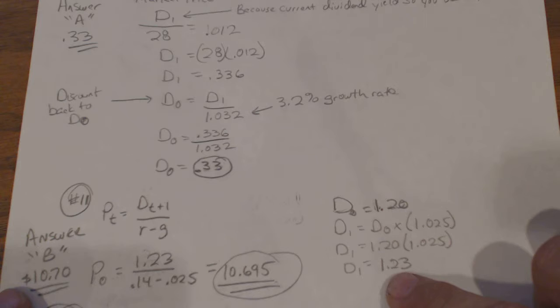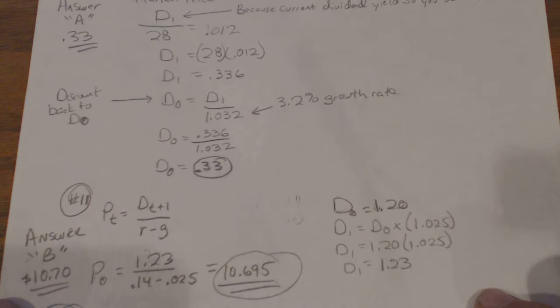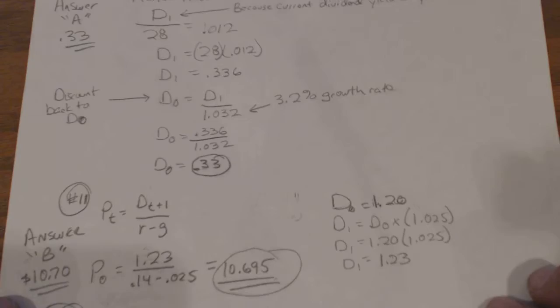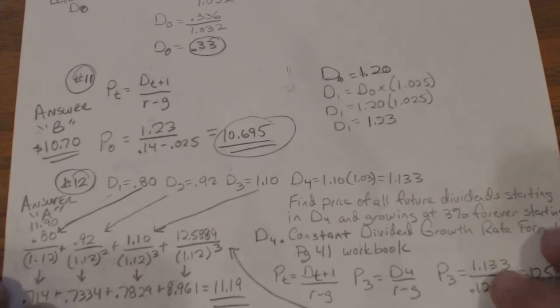So you have to figure that out first, and then you put Dt+1 which is D1, a buck 23, over r minus g. Now there's two ways you can do this but this is the easiest way. So your r is 0.14, 14 percent, your growth rate is 0.025, so the price would be $10.70, $10.695 rounded up. That's how you figure that.